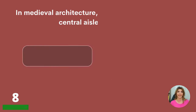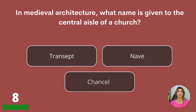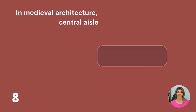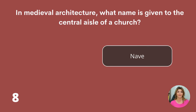In medieval architecture, what name is given to the central aisle of a church? Transept, nave, or chancel? Nave.